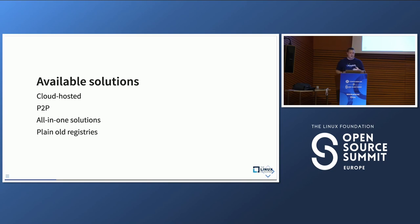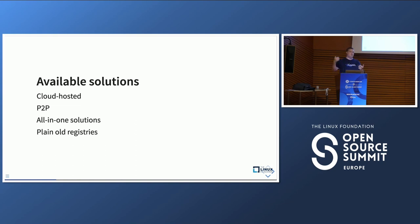We came up with four categories. Cloud-hosted solutions are the most common — basically every cloud provider has their own container registry solution. There is a special category: peer-to-peer registries, which focus on efficiently distributing images within a system rather than sharing images with external customers. Then there are the all-in-one solutions like JFrog and Harbor — the artifact repository kind of solutions. And the last one is what we call plain old registries, which are basically just container registries and nothing else.